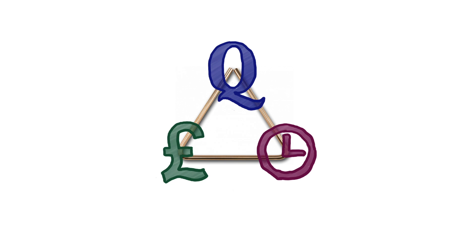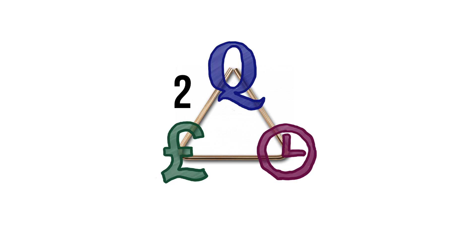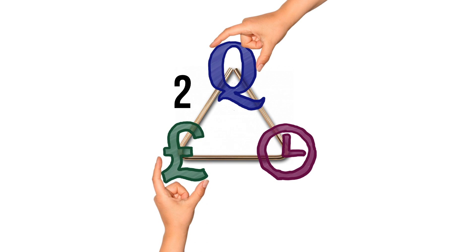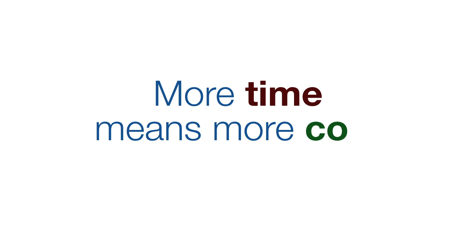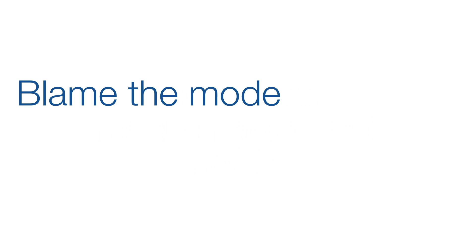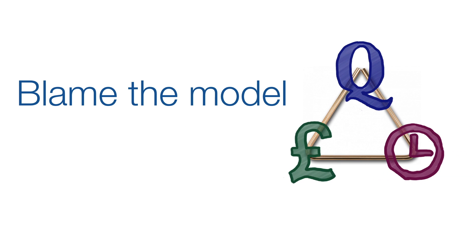So we've just seen three pairs of constraints. I have to say that while I was putting together last week's episode, it was this one that didn't really sit right with me, because more time means more cost, right? My first thought was to blame the model — cost and time aren't independent, and we're used to seeing models where parameters are independent.